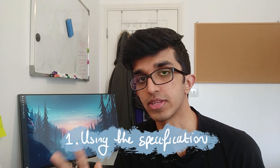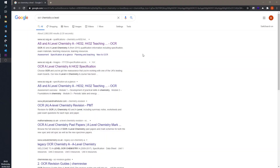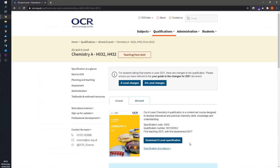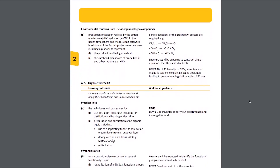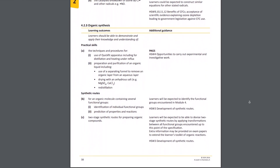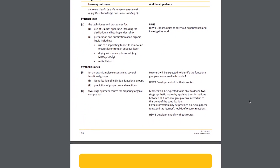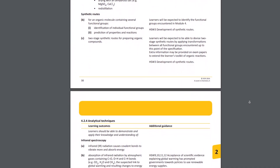My first step was to use the specification as a guide for my learning. If you don't know what a specification is, it's basically a document made for subject teachers by your exam board telling them exactly what to teach you. Despite being made for teachers, many students use it to guide their learning, and you can download yours from your exam board's website. I used the specification to stop me from getting lost in class and to help me see how the topic I was learning fits into a wider picture.